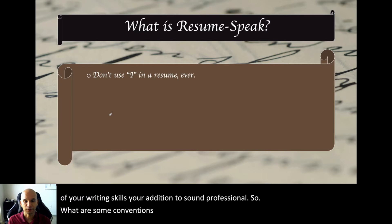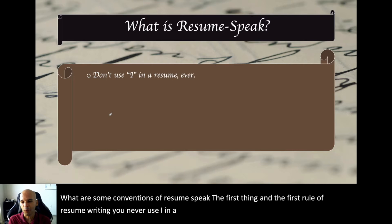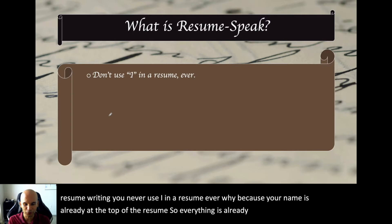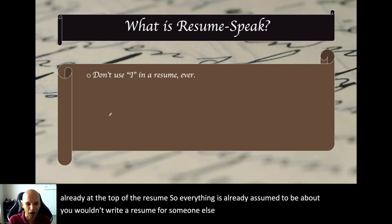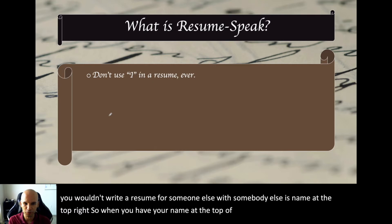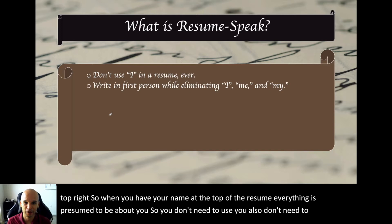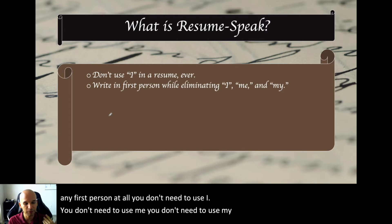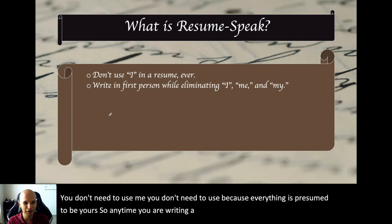So what are some conventions of resume speak? The first rule of resume writing: you never use 'I' in a resume ever. Why? Because your name is already at the top of the resume. Everything is already assumed to be about you. You wouldn't write a resume for someone else with somebody else's name at the top. So when you have your name at the top, everything is presumed to be about you. You don't need to use any first person at all — eliminate I, me, and my.